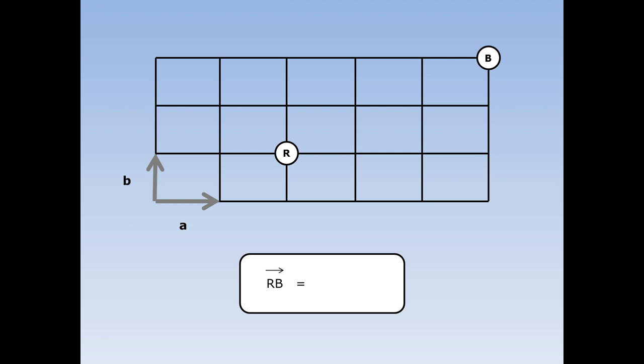How do I get from the railway station to the bakers? I need to go along three A and up two B roads, so the answer is three A plus two B.